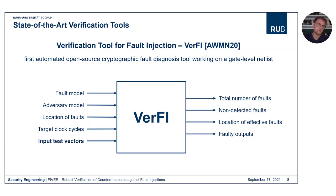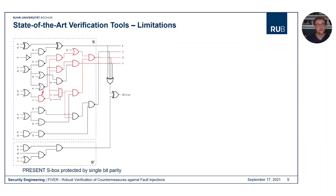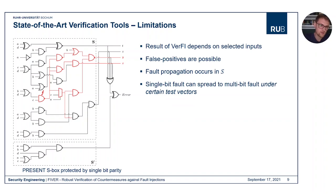The problem is that you have to define the input test vectors used for the evaluation. As an example, let's consider the PRESENT S-box protected by a single parity bit. At the top we have the S-box implementation S, and at the bottom we have the redundant circuit S'', which computes the parity bit concurrently. This S-box is not protected against single-bit faults: if you inject a single-bit fault, it can propagate to two output bits, and if both output bits are toggled, the parity bit is not able to detect this fault.